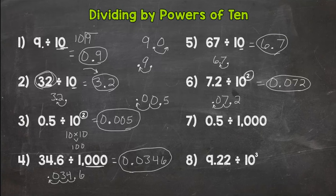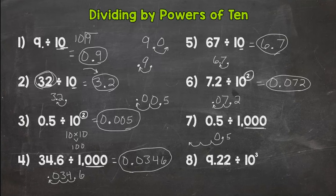Number 7: we have 5 tenths, and we are dividing it by 1,000. So we're taking something less than a whole and dividing it by 1,000, so we're going to end up with a very small number. 1,000 has three zeros, so I need to move the decimal three times — 1, 2, 3. Fill with placeholder zeros, and my answer is 5 ten-thousandths. So 5 out of 10,000 — a very small number there.